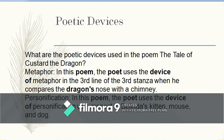Poetic devices. The poet uses metaphor: in the third line of the third stanza, the dragon's nose is compared to a chimney — meaning he was blowing fire out of his nose. Personification is also used in the poem with respect to Belinda's kitten, mouse, and dog. When certain human-like qualities are given to animals — like the kitten, mouse, and dog here — that is called personification.